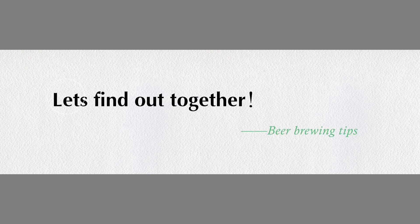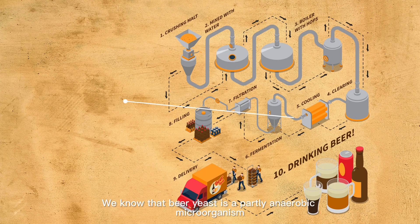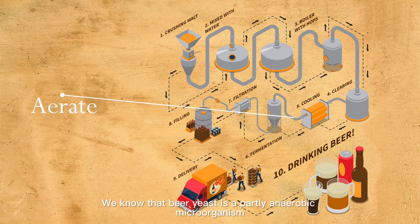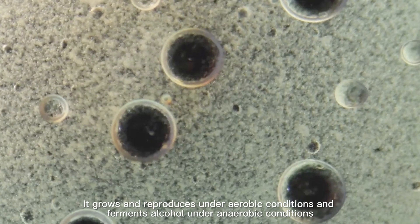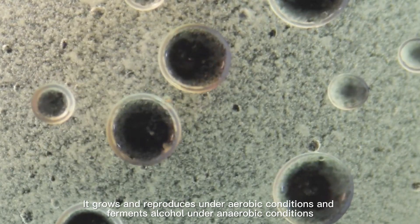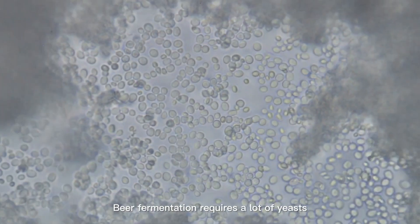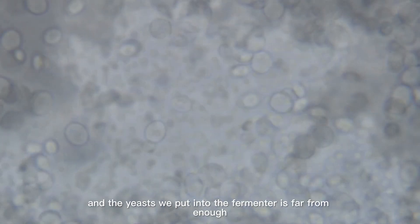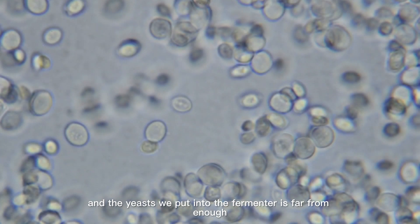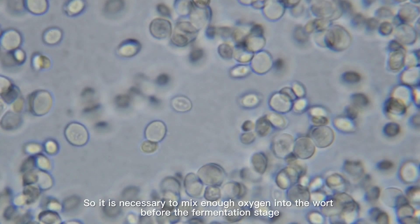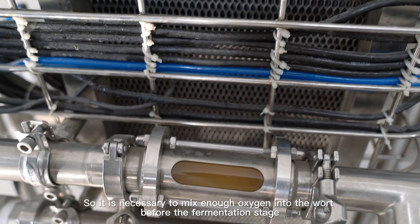Let's find out together. We know that beer yeast is a facultative anaerobic microorganism. It grows and reproduces under aerobic conditions and performs alcoholic fermentation under anaerobic conditions. Beer fermentation requires a lot of yeast, and the yeast we put into the fermenter is far from enough, so it is necessary to pass enough oxygen to the wort before entering the fermentation stage.